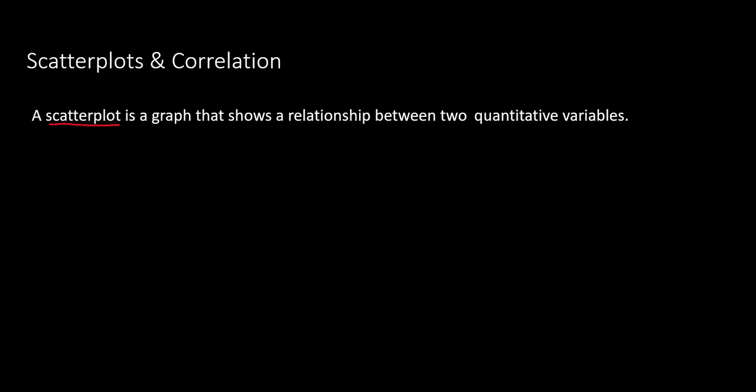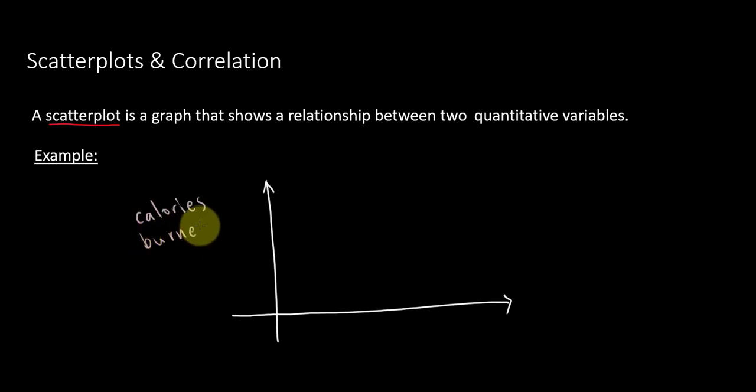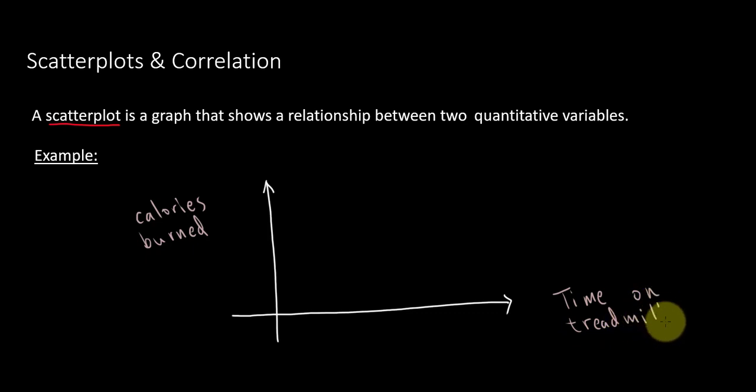So we're going to look at scatterplots and correlation. In the previous video, we saw equations of lines, and we're now looking at how two quantitative variables are related — that is what a scatterplot can show us. A scatterplot is a type of graph that plots the points for two quantitative variables. I'm going to draw a Cartesian coordinate plane with the vertical axis indicating the number of calories expended, and the horizontal axis showing time on treadmill in minutes.